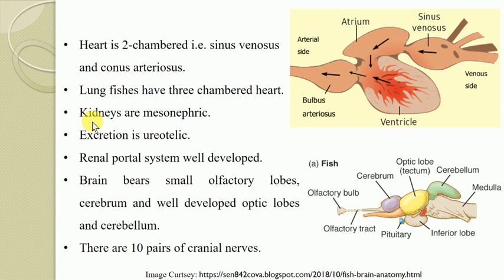The kidneys are mesonephric. Excretion is ureotelic — meaning they eliminate nitrogenous waste material in the form of urea, and such animals are called ureotelic organisms. The renal portal system is well developed among the bony fishes.